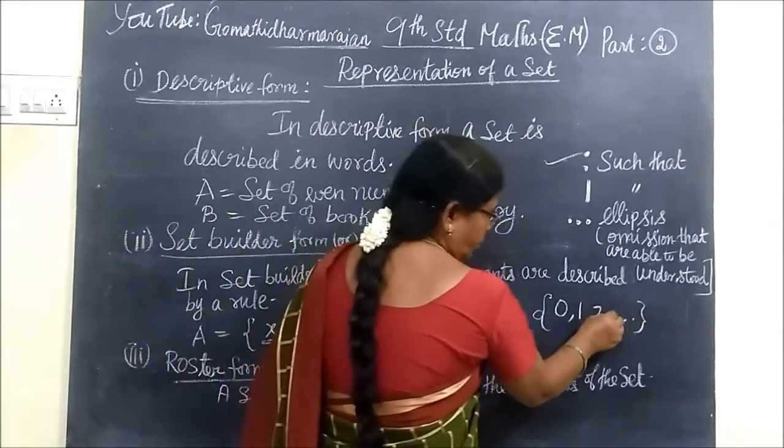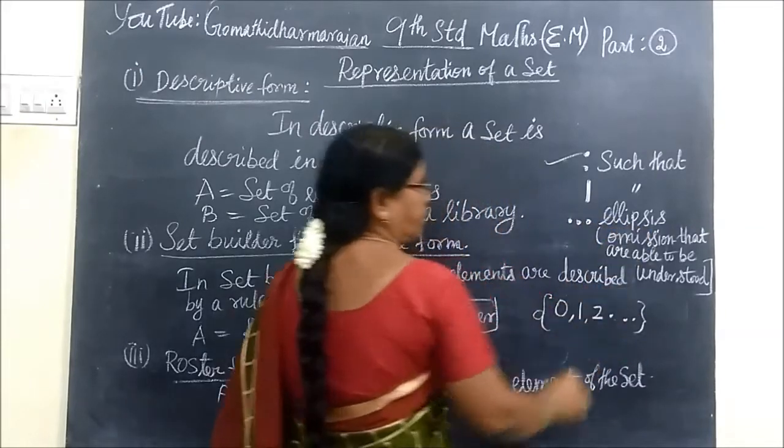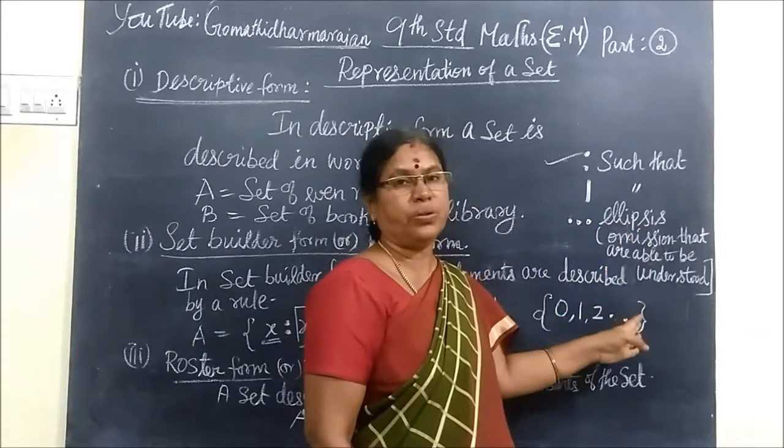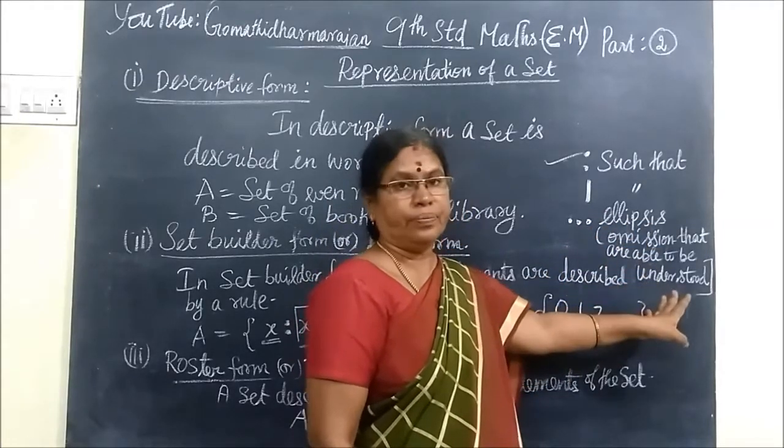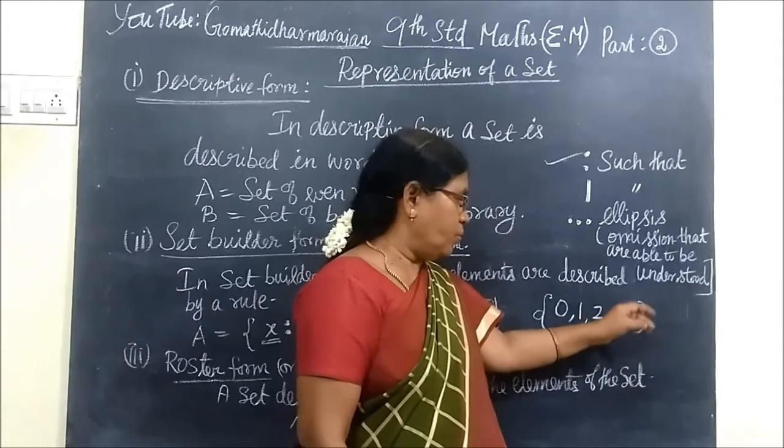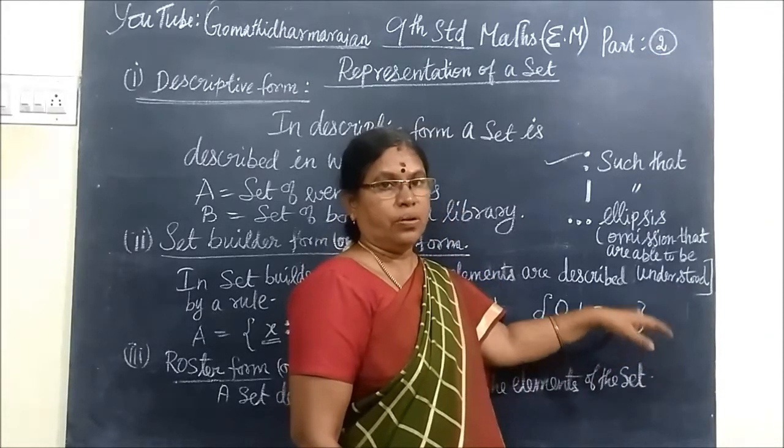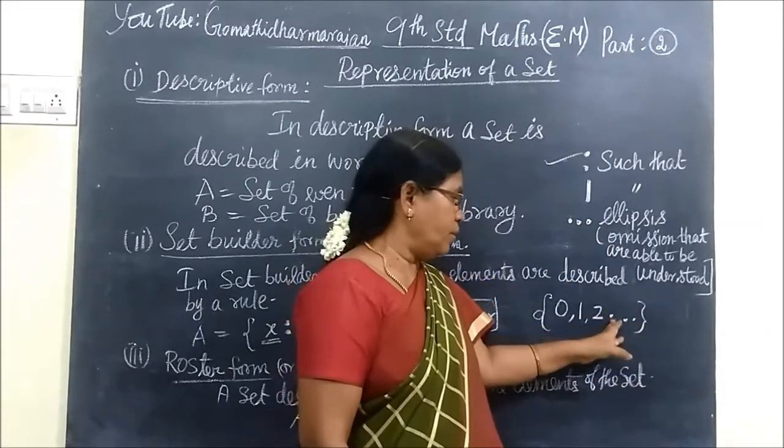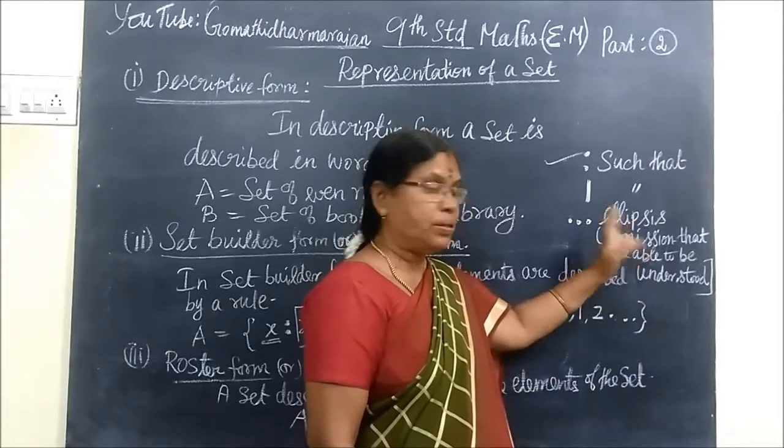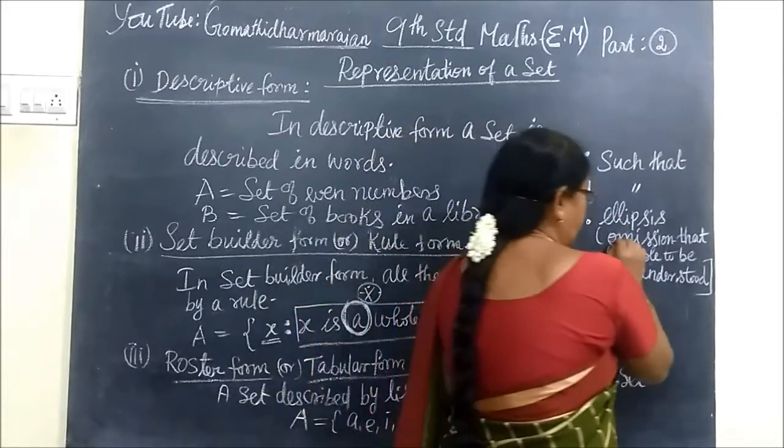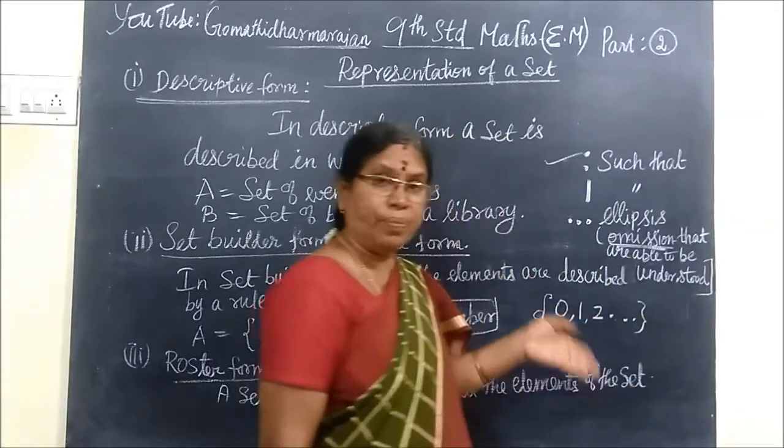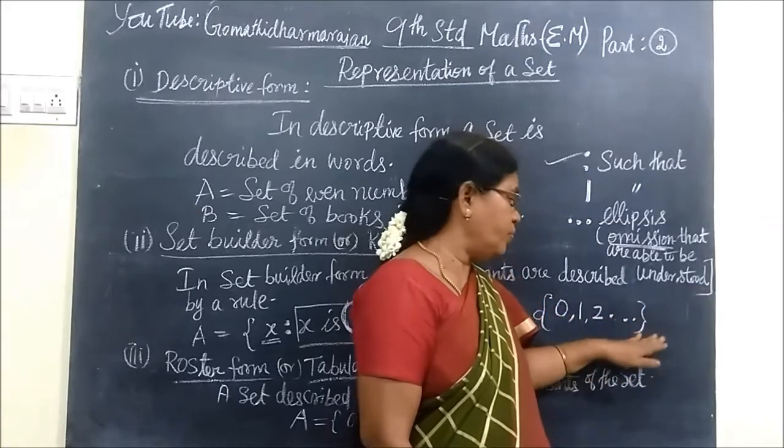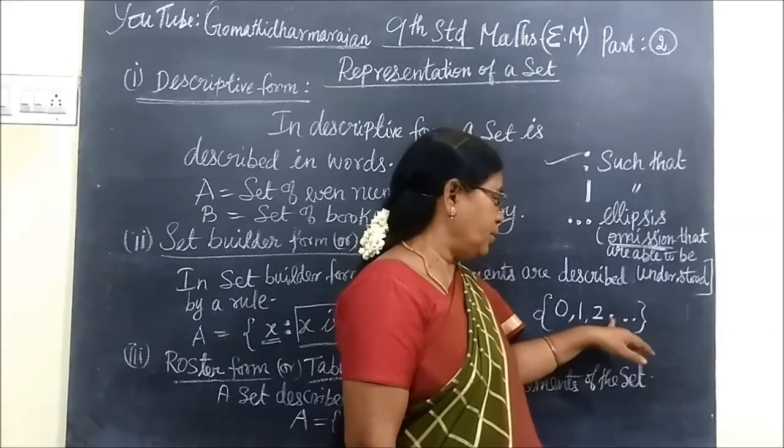This etc. means the three dots. It denotes ellipsis. Ellipsis means omission, some understanding. The next number we know, 3, 4, 5, things like that. So we can't write all the numbers. So for that we are using these three dots. We are omitting the number, but that is understood.